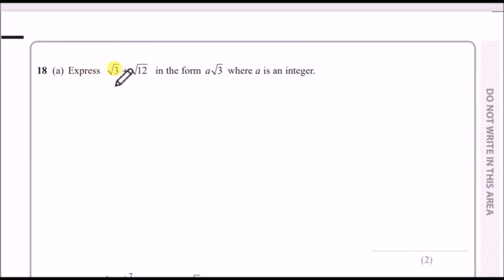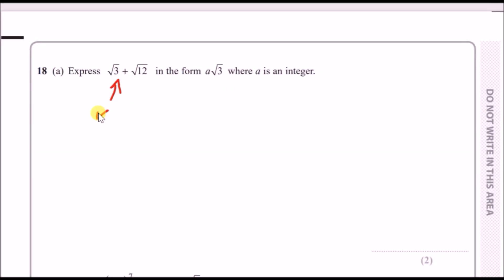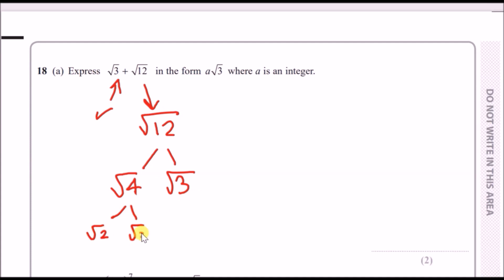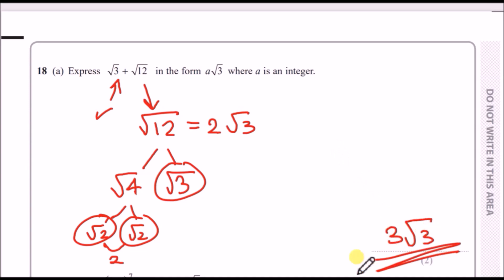Number eighteen part a: express √3 + √12 in the form a√3. Rewrite √12 using a prime factor tree: √12 = √4 × √3 = 2√3. Therefore √3 + √12 = √3 + 2√3 = 3√3, so a = 3.